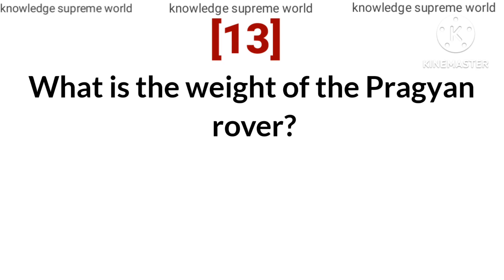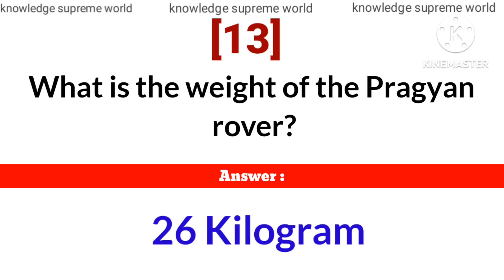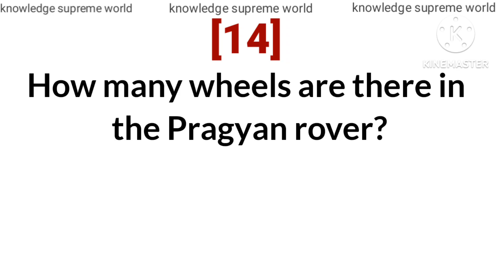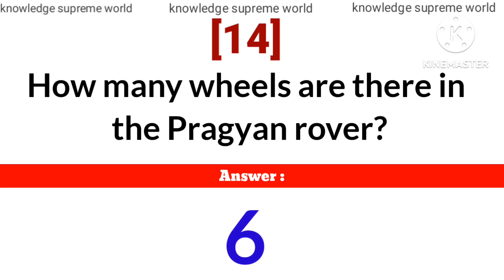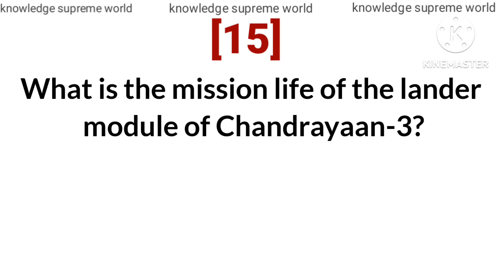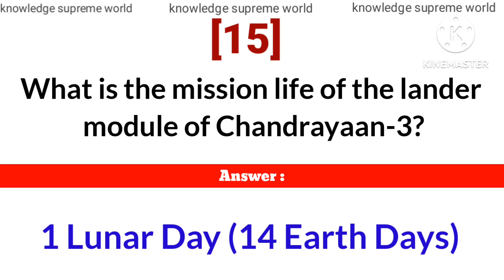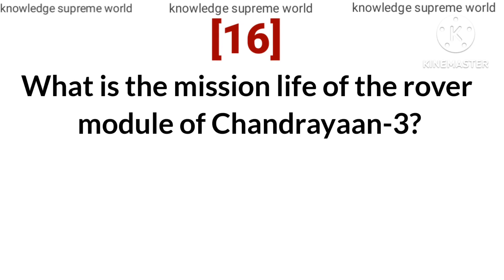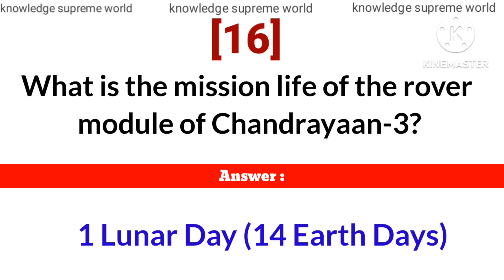What is the weight of the Pragyan rover? How many wheels are there in the Pragyan rover? Answer: 6 wheels. What is the mission life of the lander module of Chandrayaan 3? Answer: 1 lunar day, i.e., 14 Earth days. What is the mission life of the rover module of Chandrayaan 3? Answer: 1 lunar day, i.e., 14 Earth days.